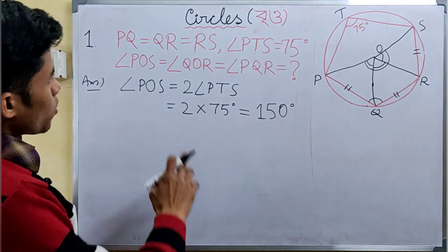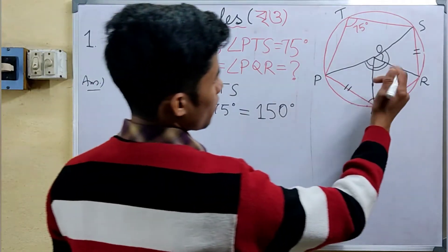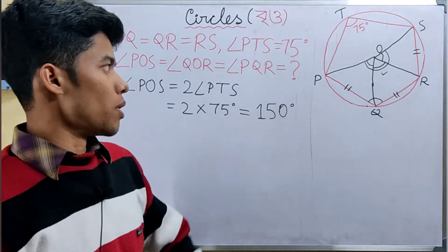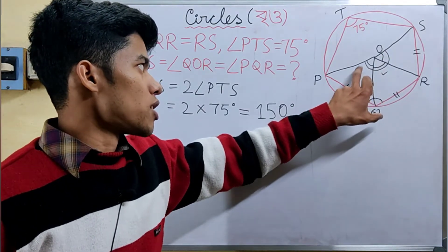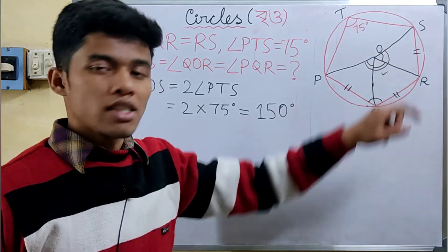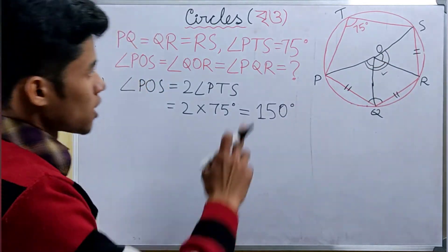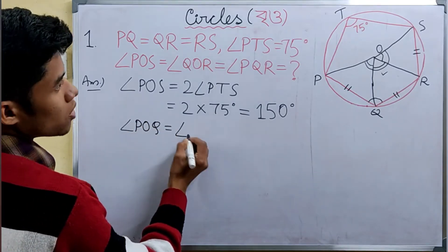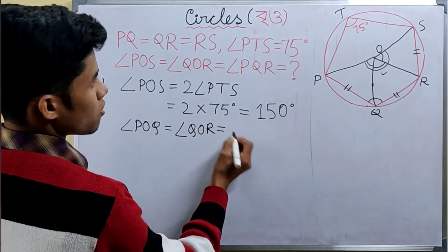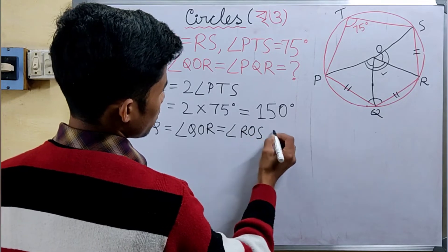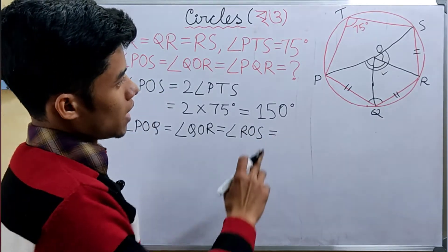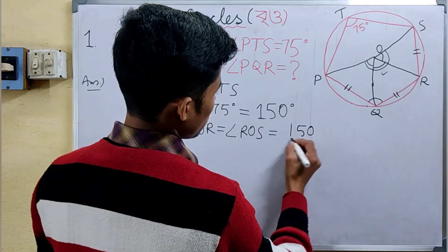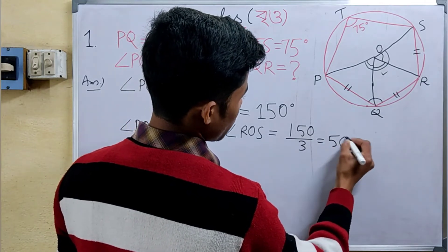Now for QOR: since POQ equals QOR equals ROS, and the total angle POS is 150 degrees, we divide equally among the three central angles. So each central angle equals 150 divided by 3, which is 50 degrees.